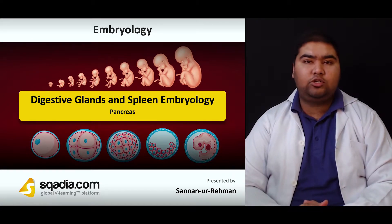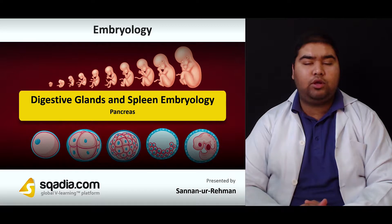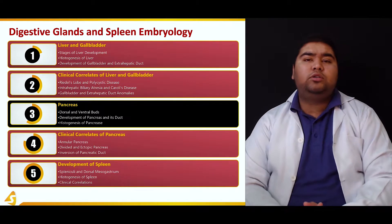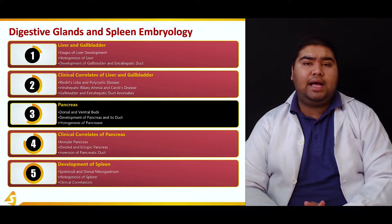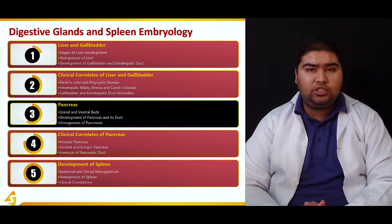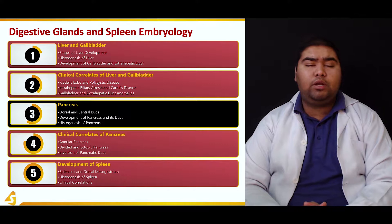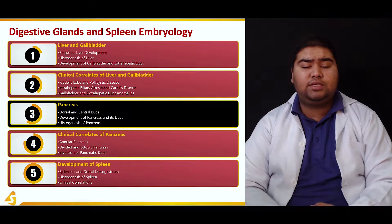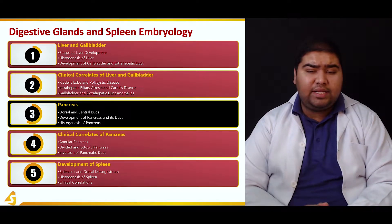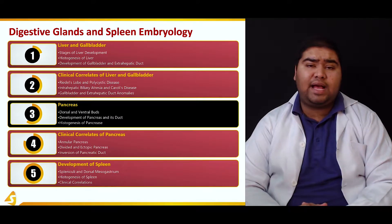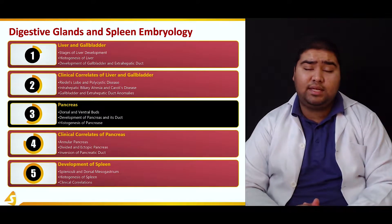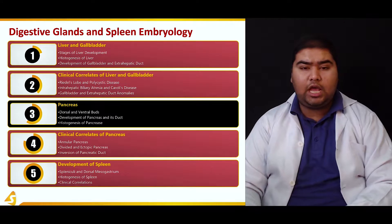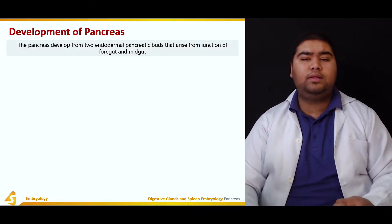Hello everyone, welcome back. We're talking about the digestive glands and spleen embryology, and now we're talking about the pancreas. The pancreas is a very important organ in digestion of food — it has an endocrine and an exocrine function. Today we'll talk about the embryological origins of the pancreas. This section has been divided into three subsections: development of the pancreas, the pancreatic ductal system, and histogenesis.